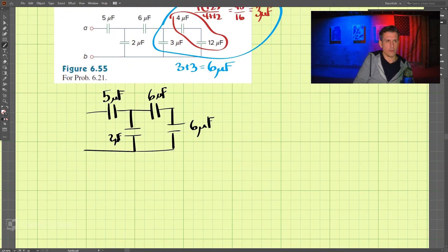Now we can combine some more. We combine the 6 with 6. And what we'll find there is that is 6 times 6 divided by 6 plus 6. And that is 36 divided by 12, which is 3 microfarads.